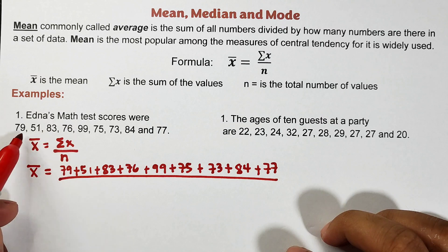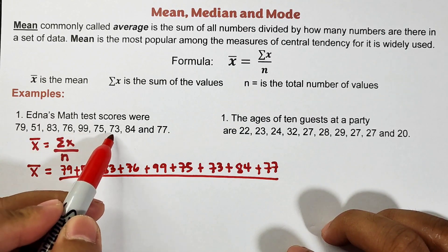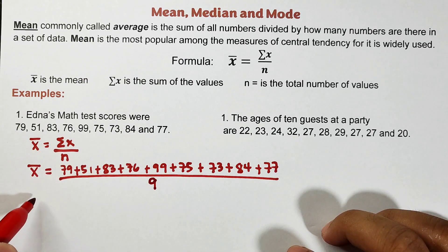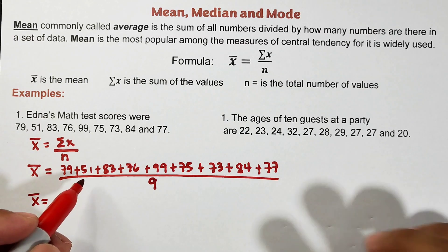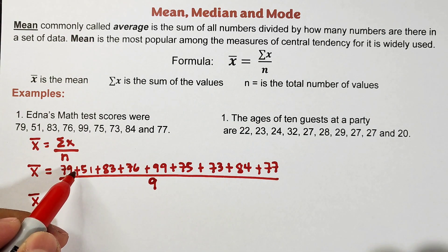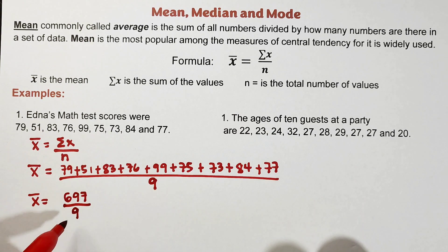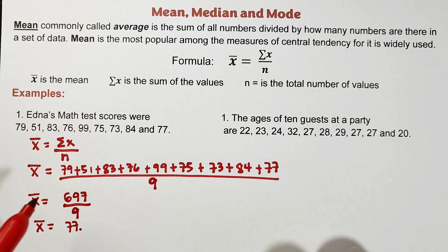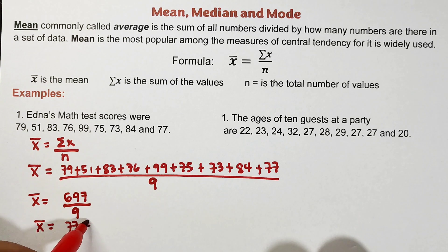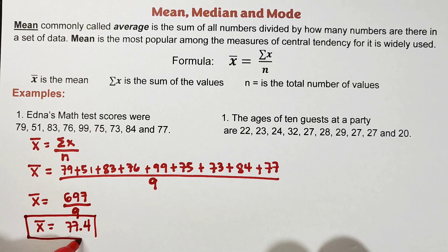For n, we count the number of test scores: 1, 2, 3, 4, 5, 6, 7, 8, and 9 — so this is over 9. The sum of these numbers from 79 to 77 is 697, divided by n which is 9. When you divide this, the quotient is 77.444... but we will minimize the decimal to a single decimal place. So the mean of Edna's math test scores is 77.4.